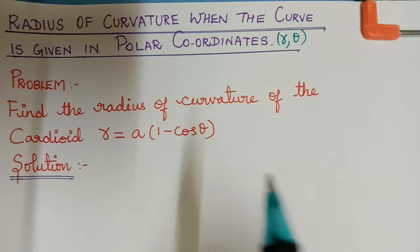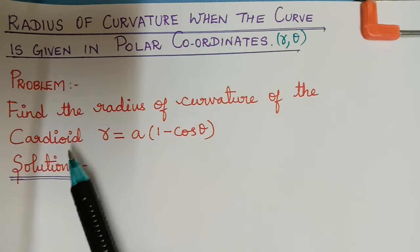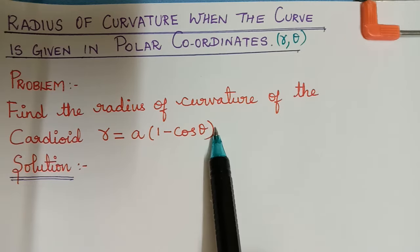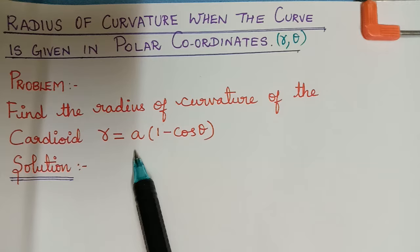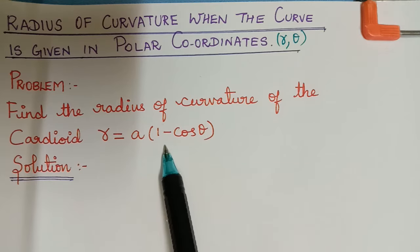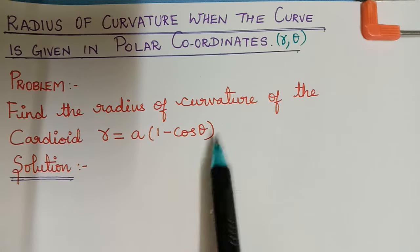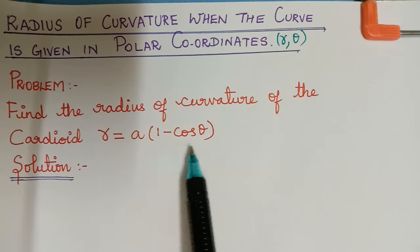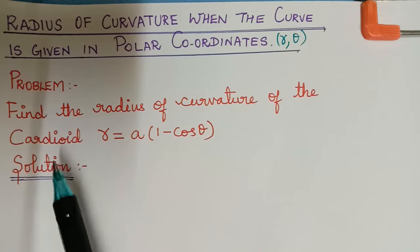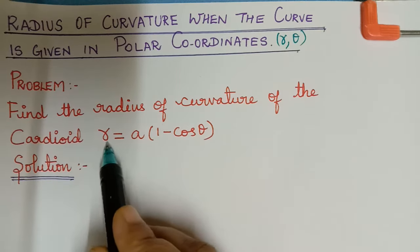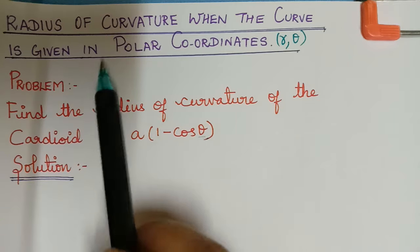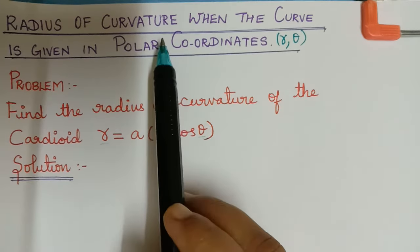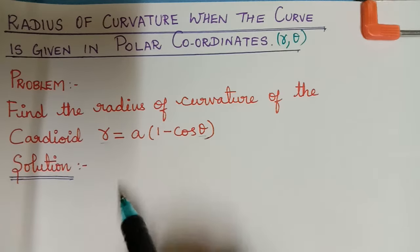The question is: find the radius of curvature of the cardioid r equal to a multiplied with 1 minus cos theta. The curve given is a cardioid which is in terms of r and theta, so we have to use the radius of curvature formula for polar coordinates.